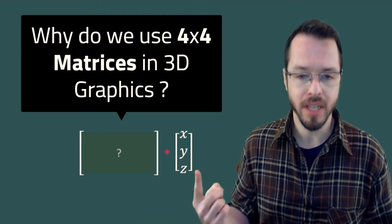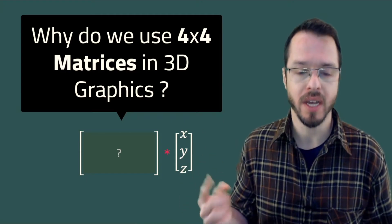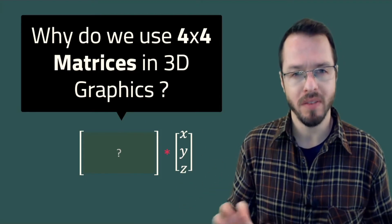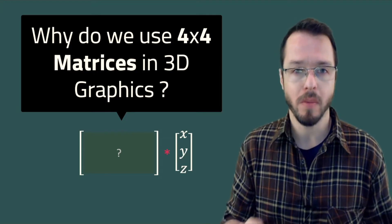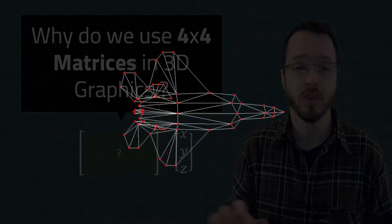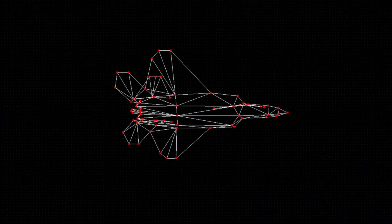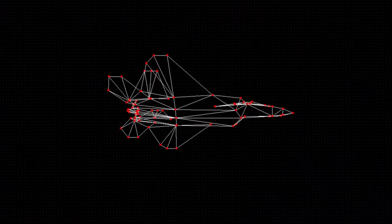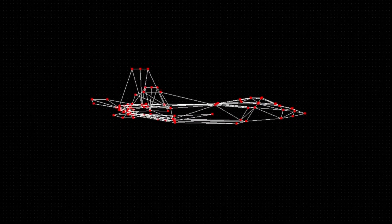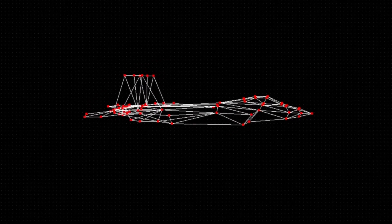We have our points — our x, y, and z points in space. Whenever we want to apply a transformation — rotate, scale, translate — why are these transformations encoded in a 4x4 matrix?